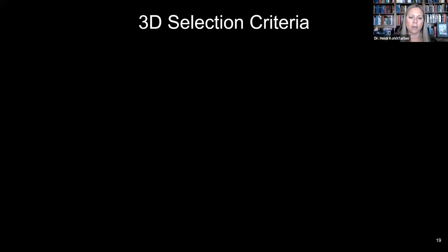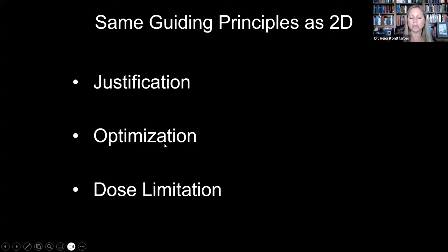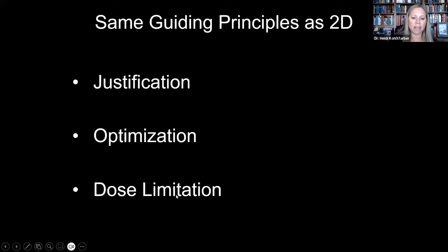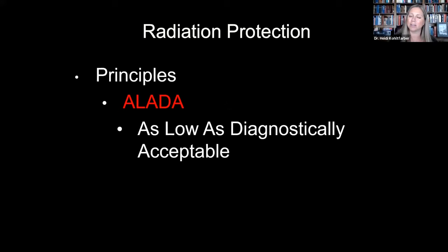A little bit on 3D selection criteria — it really has the same guiding principles as 2D. We need to be able to justify it and say why we moved into 3D imaging. Optimization means using the smallest field of view needed for the task. Dose limitation means we want to decrease the dose for that patient if possible. We want to use a dose as low as reasonably achievable, but take into consideration that we can actually be too low with some of our CBCTs. So we're moving from ALARA to ALADA — as low as diagnostically acceptable — making sure we're taking an image that is diagnostically acceptable.